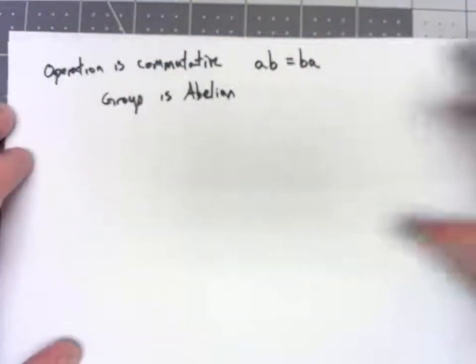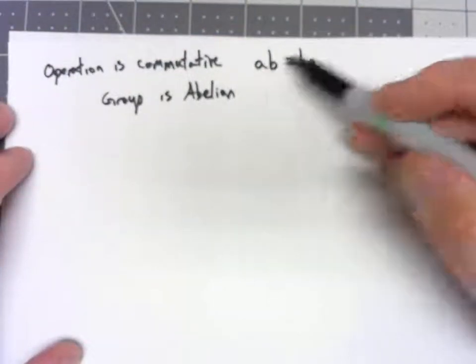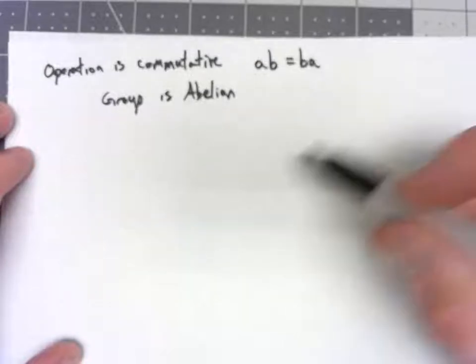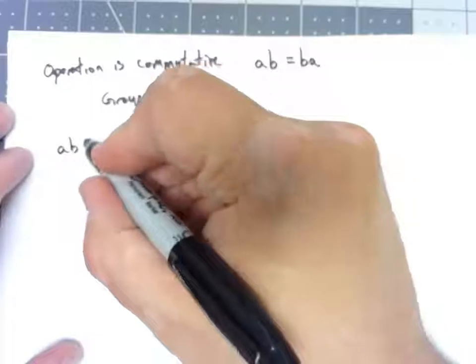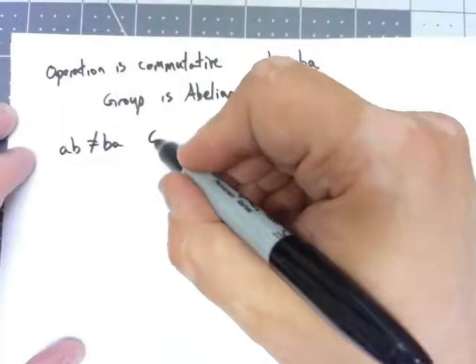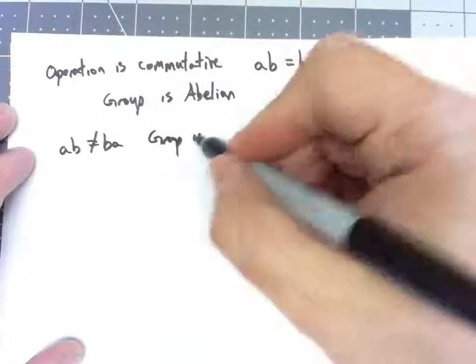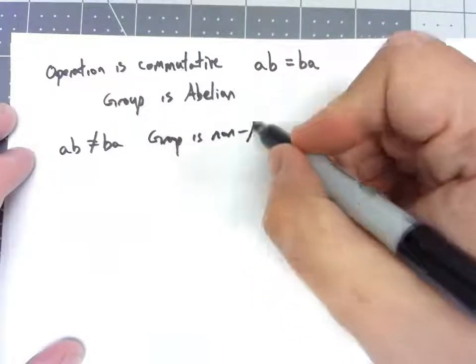On the other hand, if you can find any two elements where that is not true, if you can find any two elements where AB is not the same as BA, then the group is non-abelian.